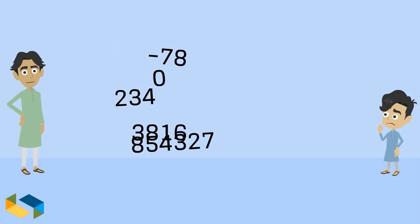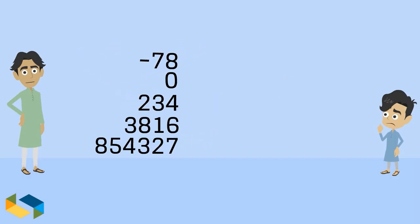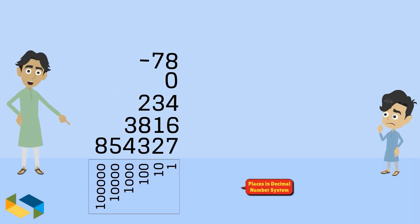In the decimal number system, the value of the digits in any number depends on where they are placed.